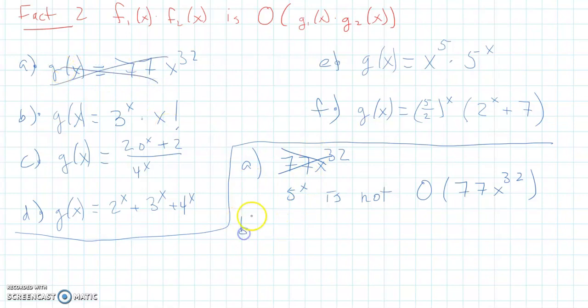For part b, well, we have 3 to the x times x factorial. Well, factorials grow fastest of all. Those are our fastest growing functions. And because of fact 2 up here, which says that when you multiply two functions together, the big O bound is the product of what bounds them. Well, this is a factorial function which is bigger than all exponentials. So that means 5 to the x is big O of 3 to the x times x factorial because x factorial grows faster than the exponential. So that one works.